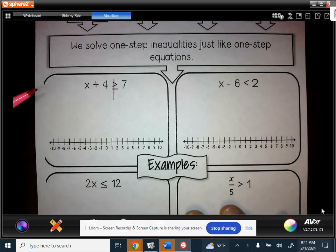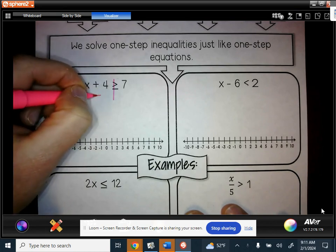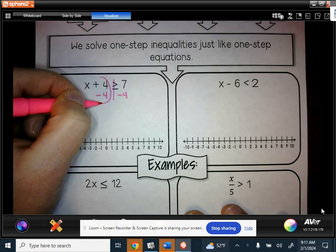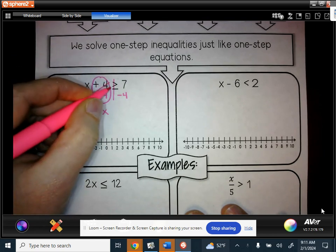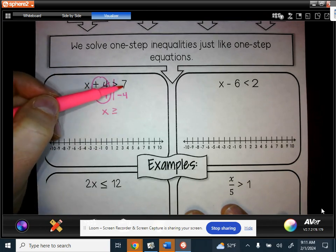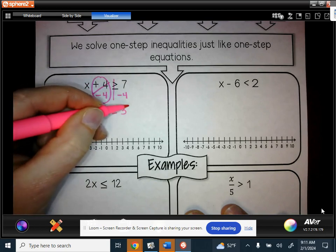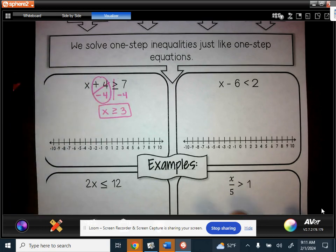And we still want to get our variable by itself. So right now, the plus 4 is keeping the variable from being by itself. So we need to subtract 4 from both sides. That's going to cancel out, leaving x. Instead of an equal sign coming down, we just bring that same symbol down. And then we have 7 minus 4, which is 3. So our solution set here is x is greater than or equal to 3.